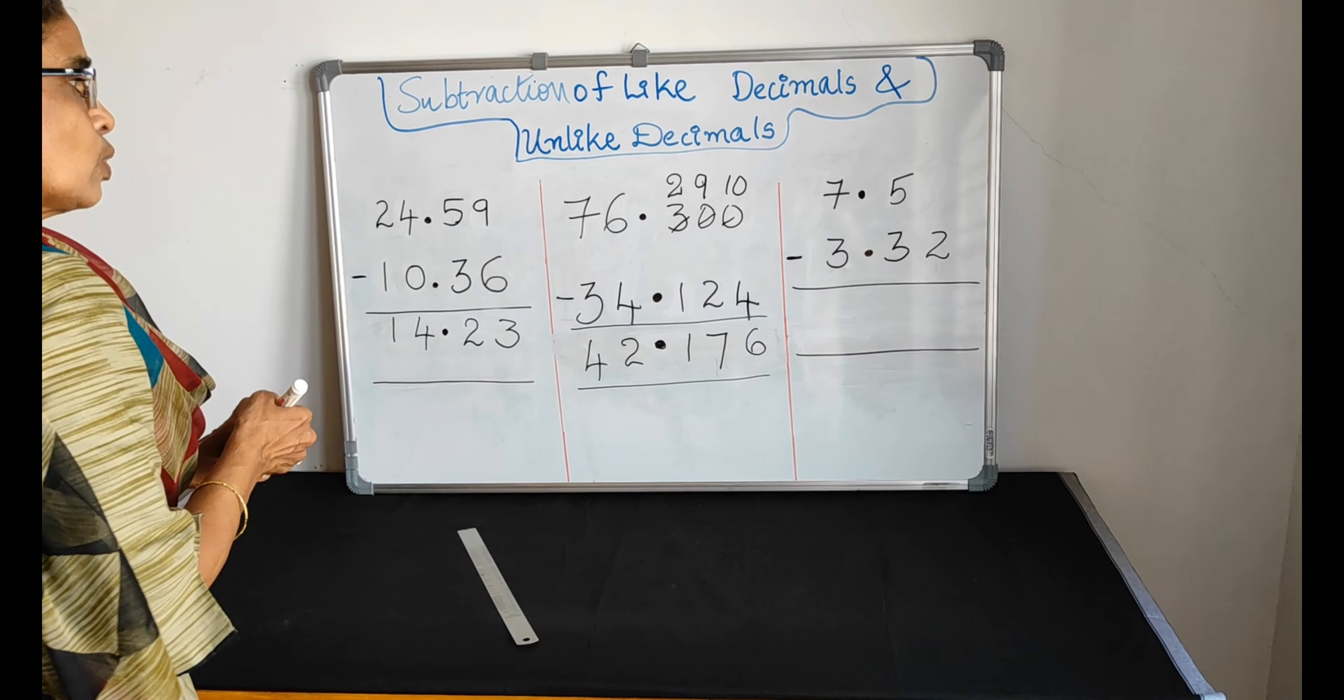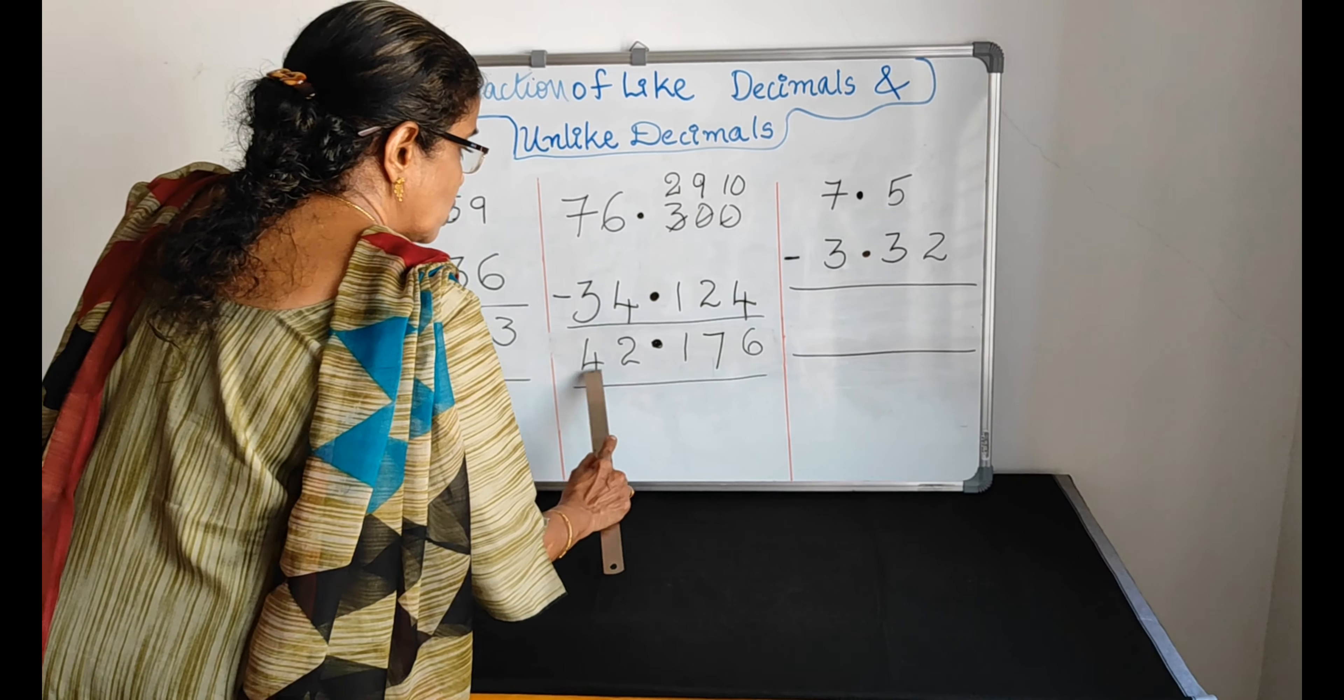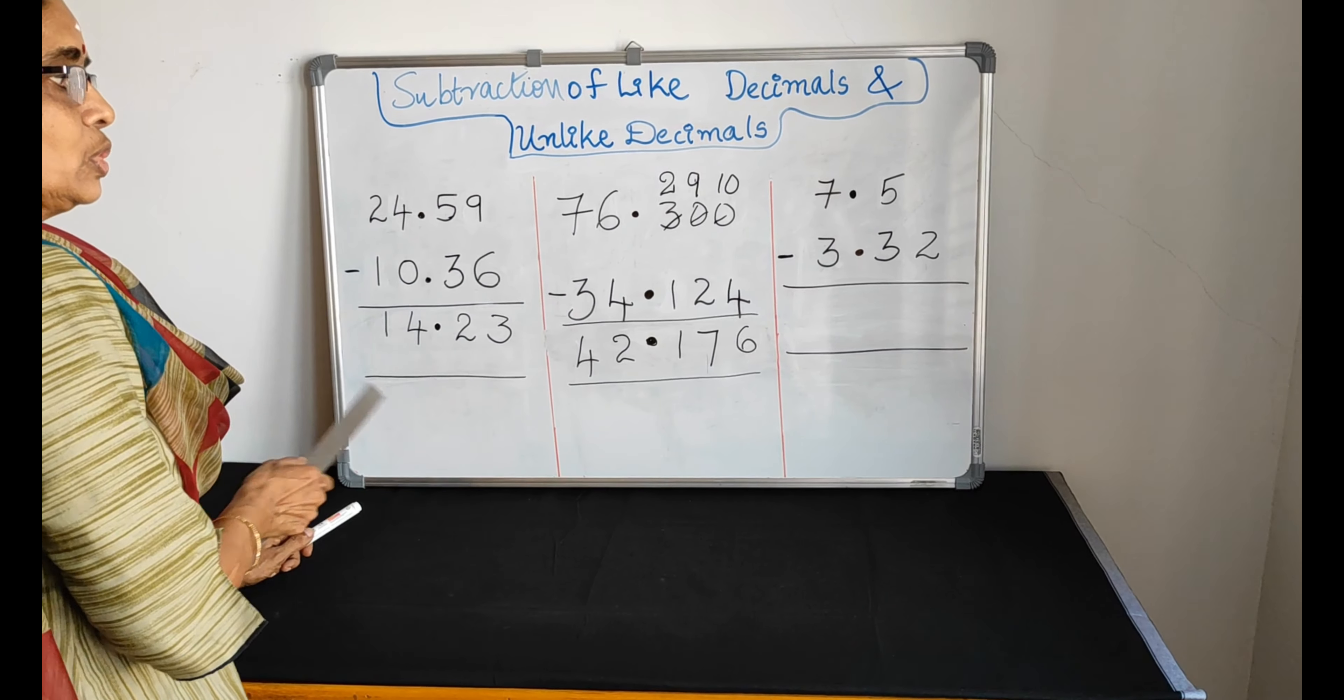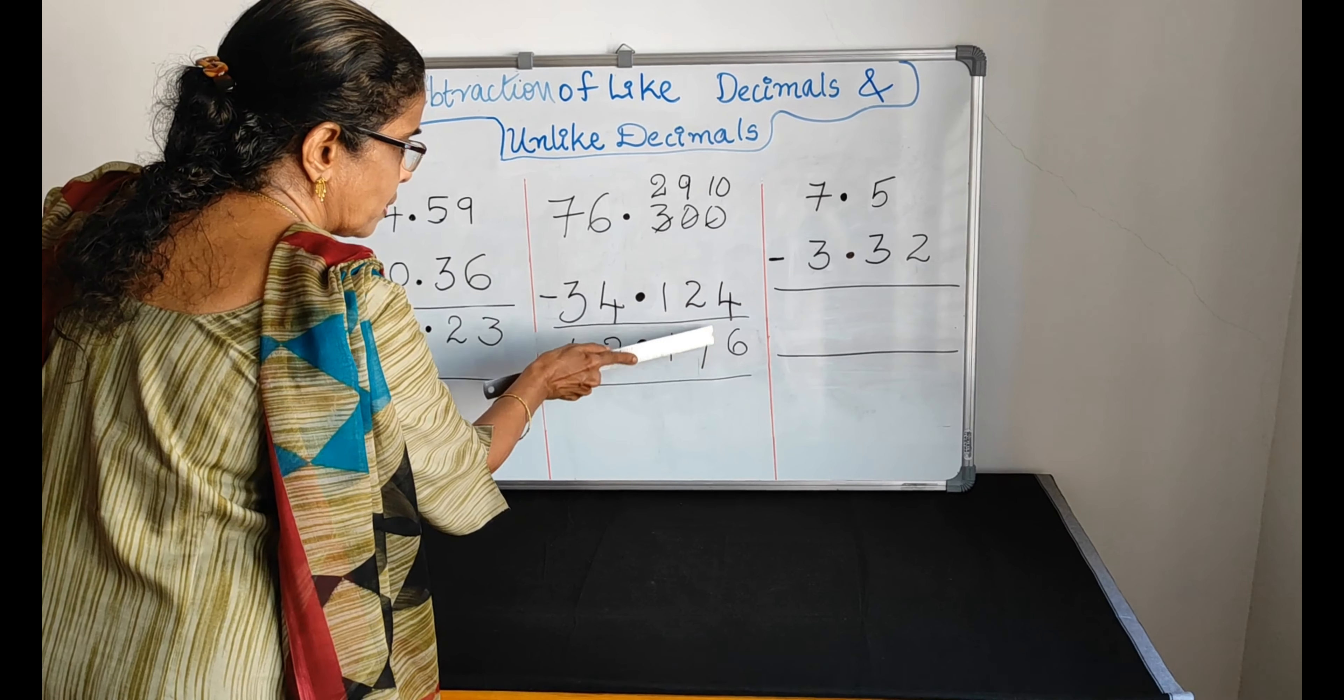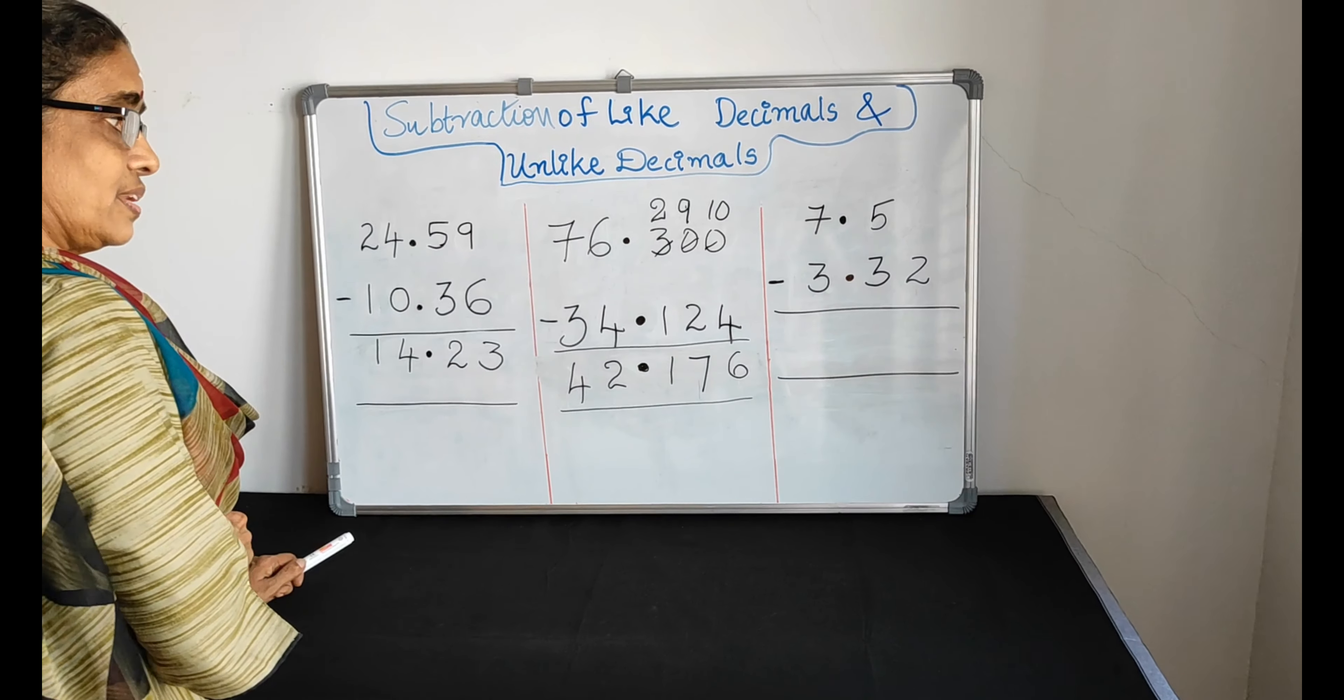9 minus 2, which is 7. 2 minus 1, which is 1. What about the dot? The dot automatically comes straight.